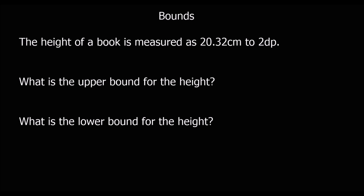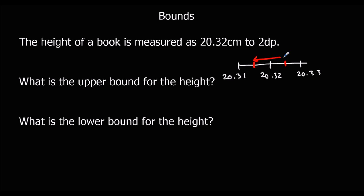The height of a book is measured as 20.32 centimeters to two decimal places. The next one up is 20.33 and the next one down is 20.31. Looking halfway between each adjacent value, the upper bound is 20.325 centimeters and the lower bound is 20.315 centimeters.